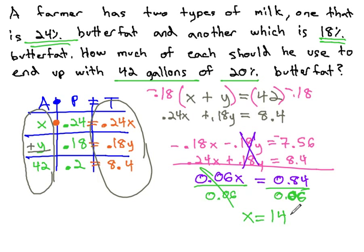We still need our value for the y or the other milk. Going back to the original equation, we know x plus y is 42, so 14 plus y is 42. And subtracting 14 from both sides, we end up with 28 for our y.